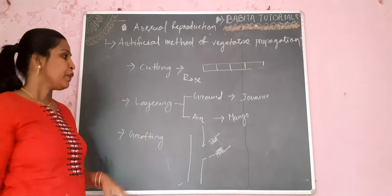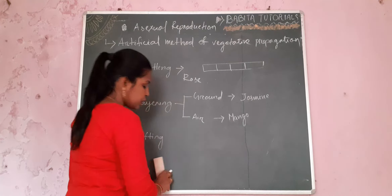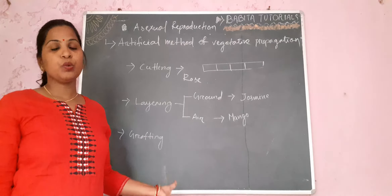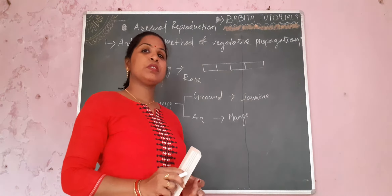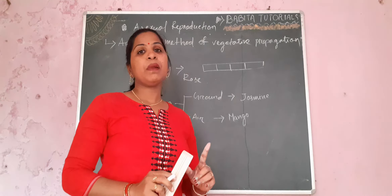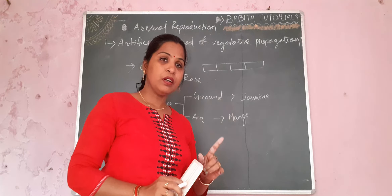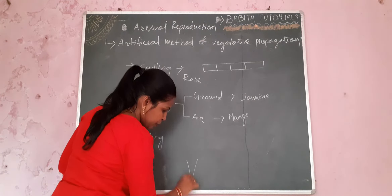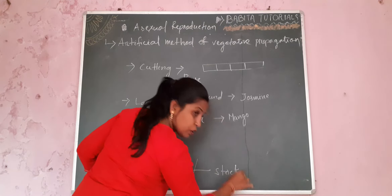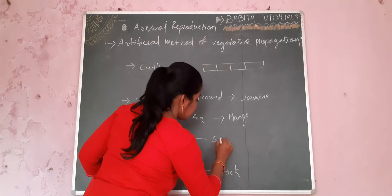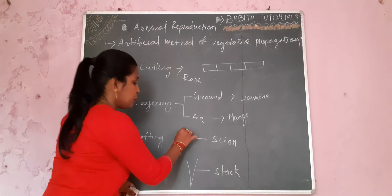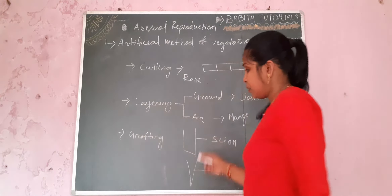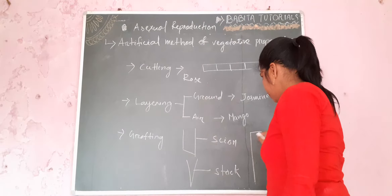Next we will go for grafting. Grafting is the process in which two characters of two different plants are found in one single plant. Suppose two rose plants: one has ornamental value and the other has a defense mechanism. I need a plant that has both. So I go for grafting. The part that provides the root system is known as stock. The part that is attached to the stock is called the scion. There are three types of grafting.